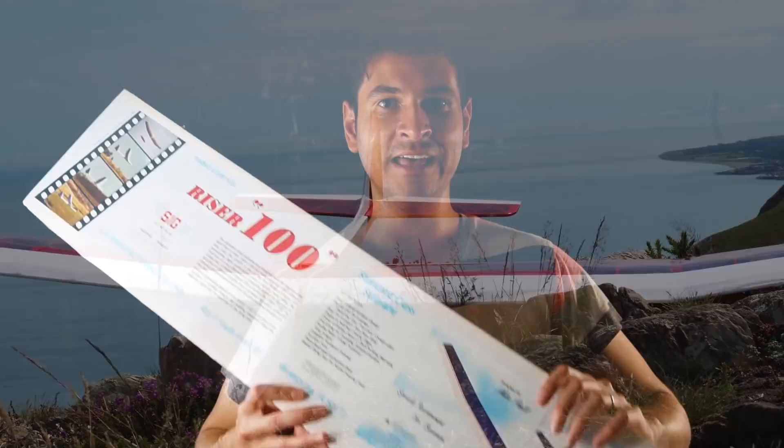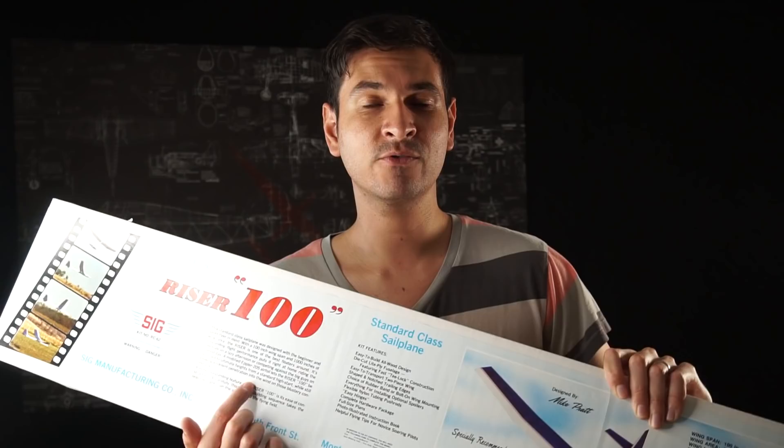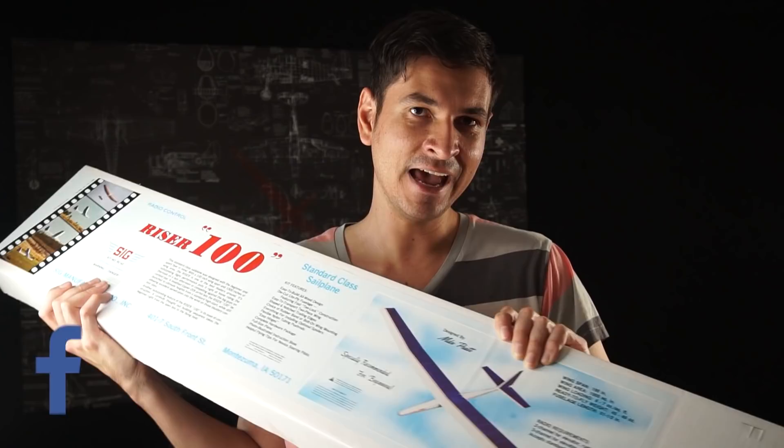It comes in this kit, in this box, and in here you have everything you need to build it from scratch. Well, the pieces—some of them are already cut in shape—but it comes with the plans and everything else, and you have to put everything together from scratch.